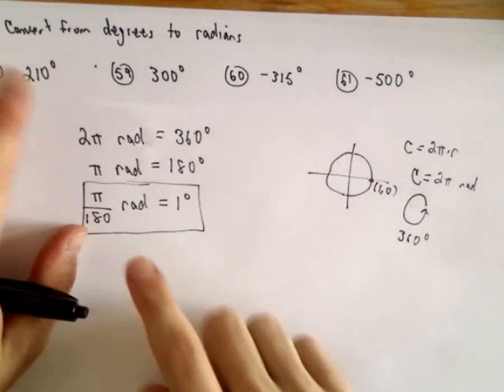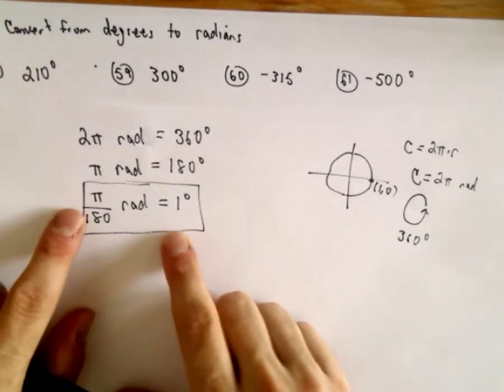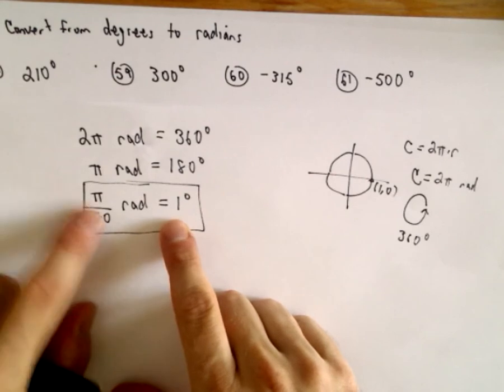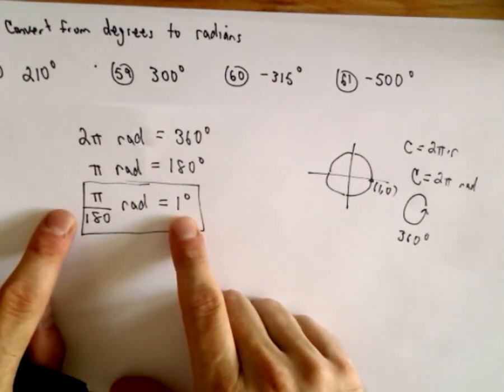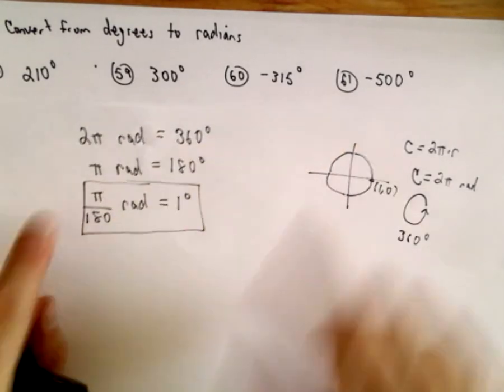Because to convert, to get say 210 degrees, I'm just going to multiply both sides by 210 and reduce to the left side. To get 300 degrees, I'm going to multiply both sides by 300, simplify, et cetera, et cetera.